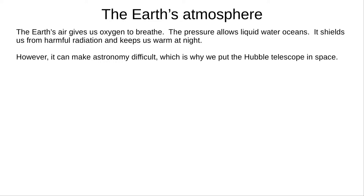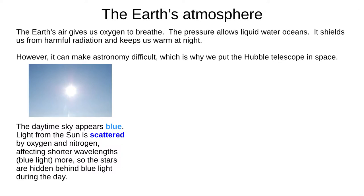In the daytime, the sky is bright blue when it's not covered with clouds. The oxygen and nitrogen molecules in the air scatter light, and short wavelengths, like blue, are affected much more. This scattered blue light obscures the stars in the daytime.